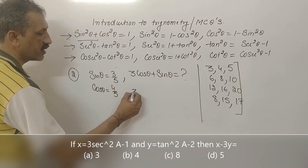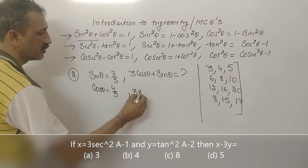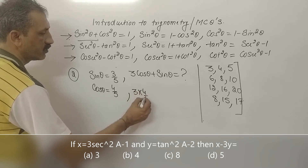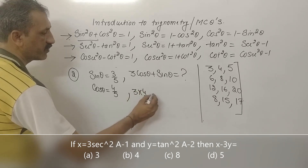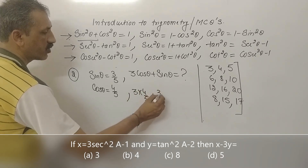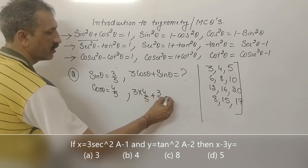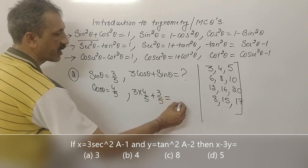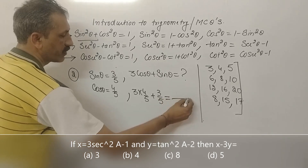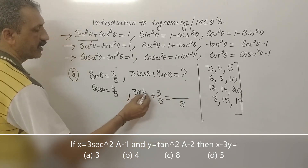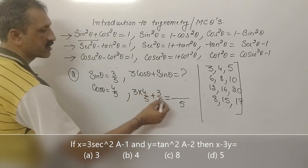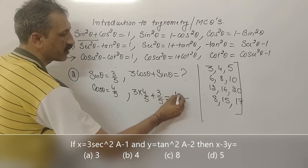Since sin theta is 3 by 5, using the Pythagorean triplet 3, 4, 5, cos theta is 4 by 5 and sin theta is 3 by 5.